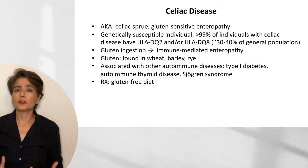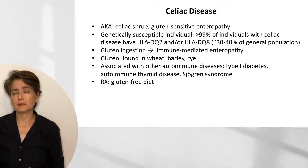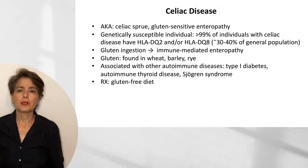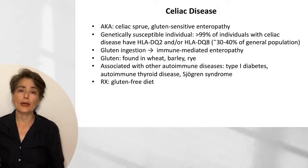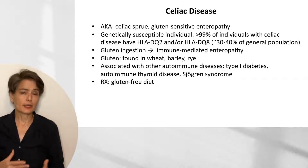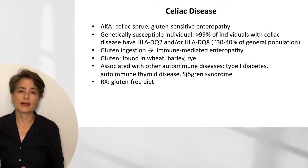Celiac disease, also known as celiac sprue and gluten-sensitive enteropathy, arises in genetically susceptible individuals who develop an immune-mediated enteropathy. More than 99% of people with celiac disease have HLA-DQ2 and/or HLA-DQ8 MHC Class 2 molecules. This may seem like a great way to start screening, but about 30-40% of the general population also have these Class 2 molecules.